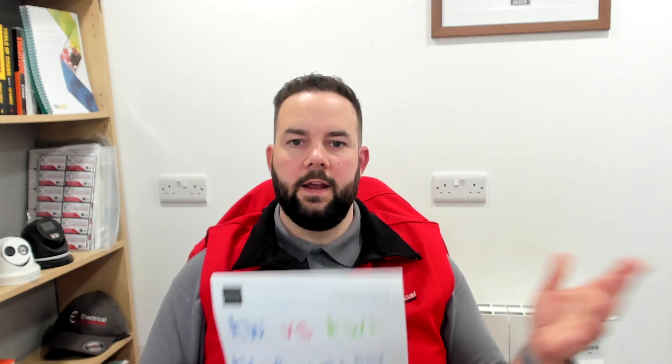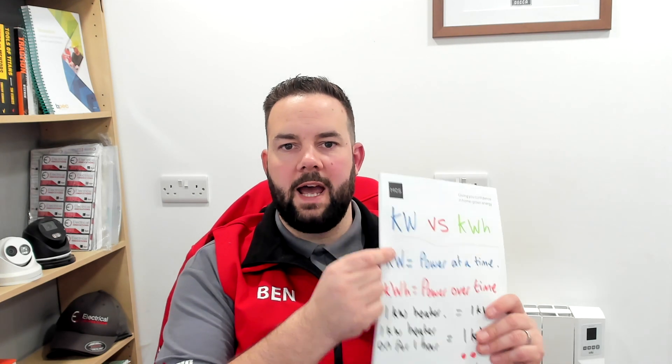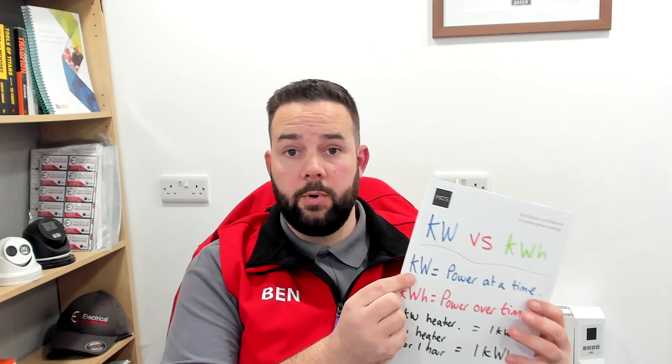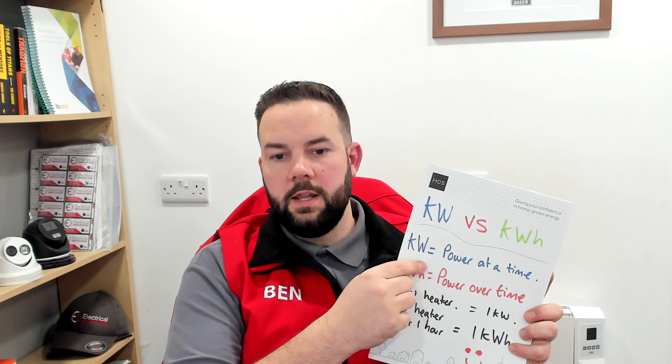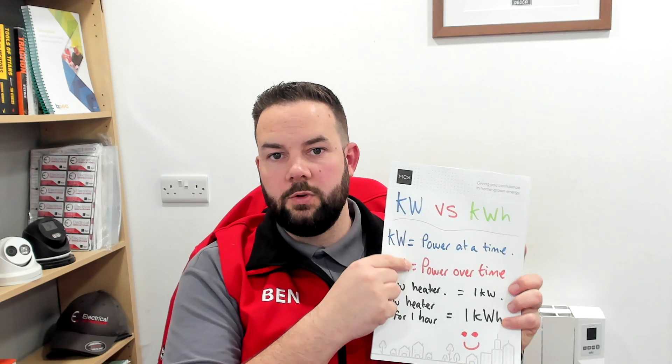So kilowatts: if you've got a seven kilowatt car charger, eight and a half kilowatt shower, three kilowatt immersion heater — that's power used at once. For example, when you've got a solar array which is nine kilowatts of solar on your roof, it could produce nine kilowatts at once. What you're actually wanting to look at is how many kilowatt hours in a day, a year, or in 25 years it produces.